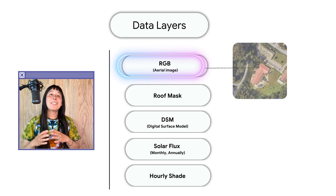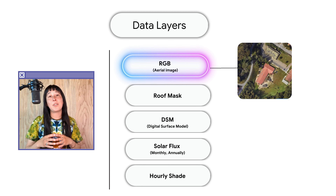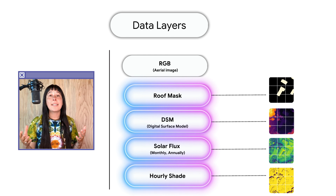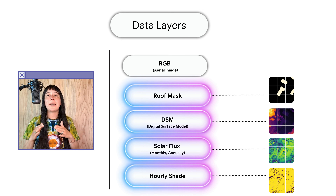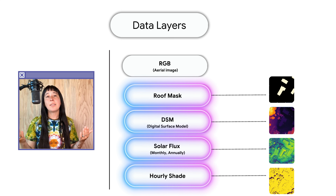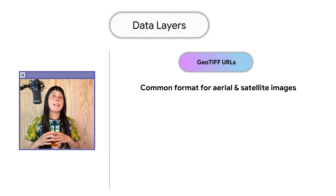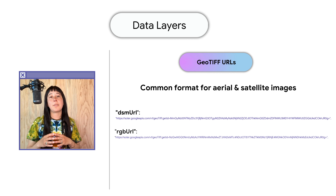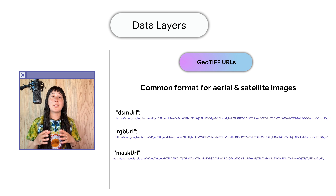An important thing to note is that the aerial dataset is the only one that comes as a traditional image. The rest of the datasets are numeric data, which gives information about a pixel, and you can combine multiple layers and apply your desired colors in order to visualize this data on a map. The specific output of these layers are URLs of GeoTIFFs, which is a type of image file that contains numeric data mapping to each pixel of the image.